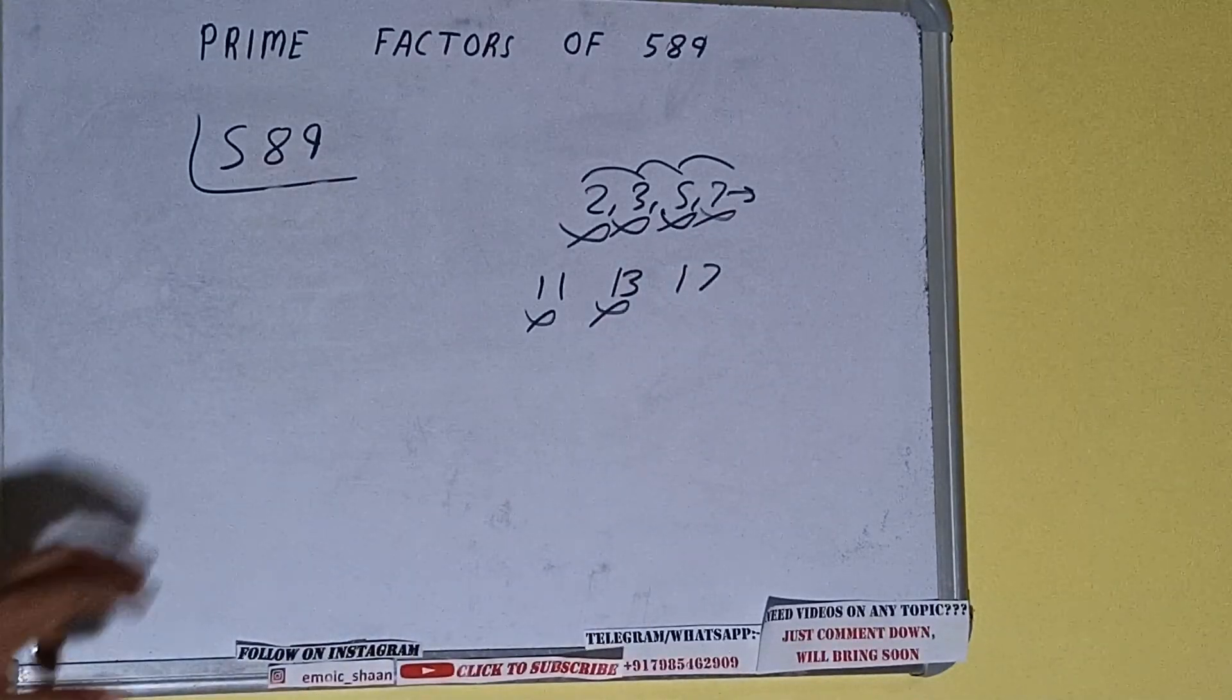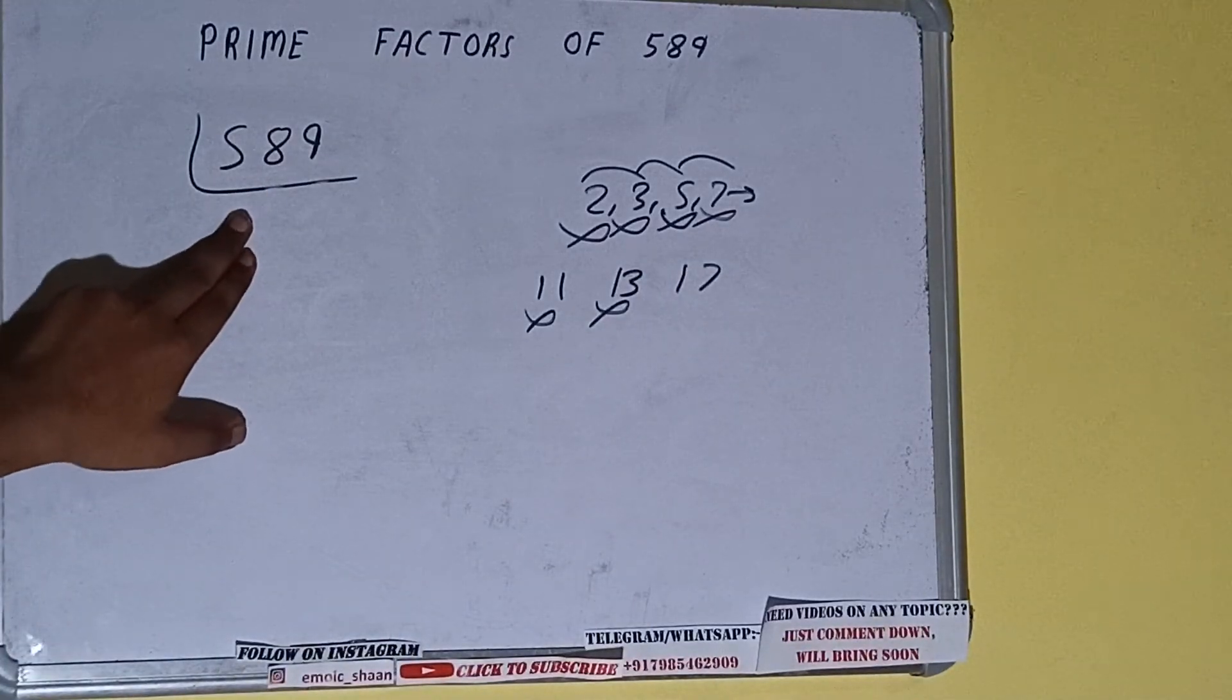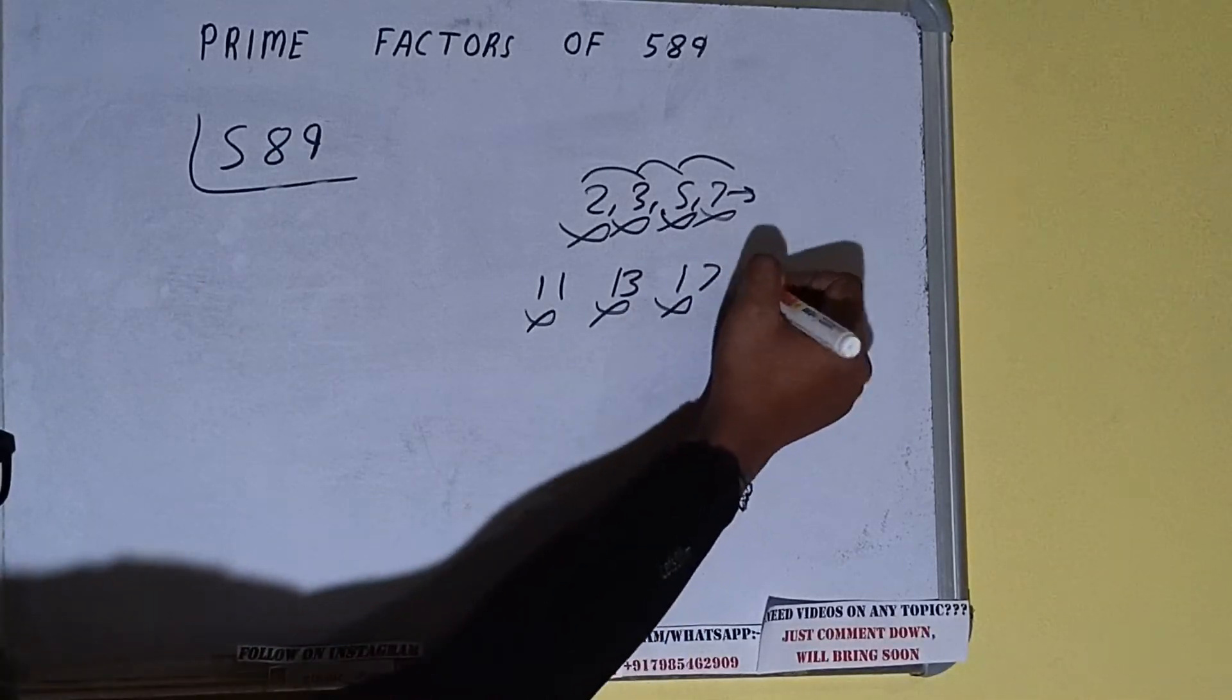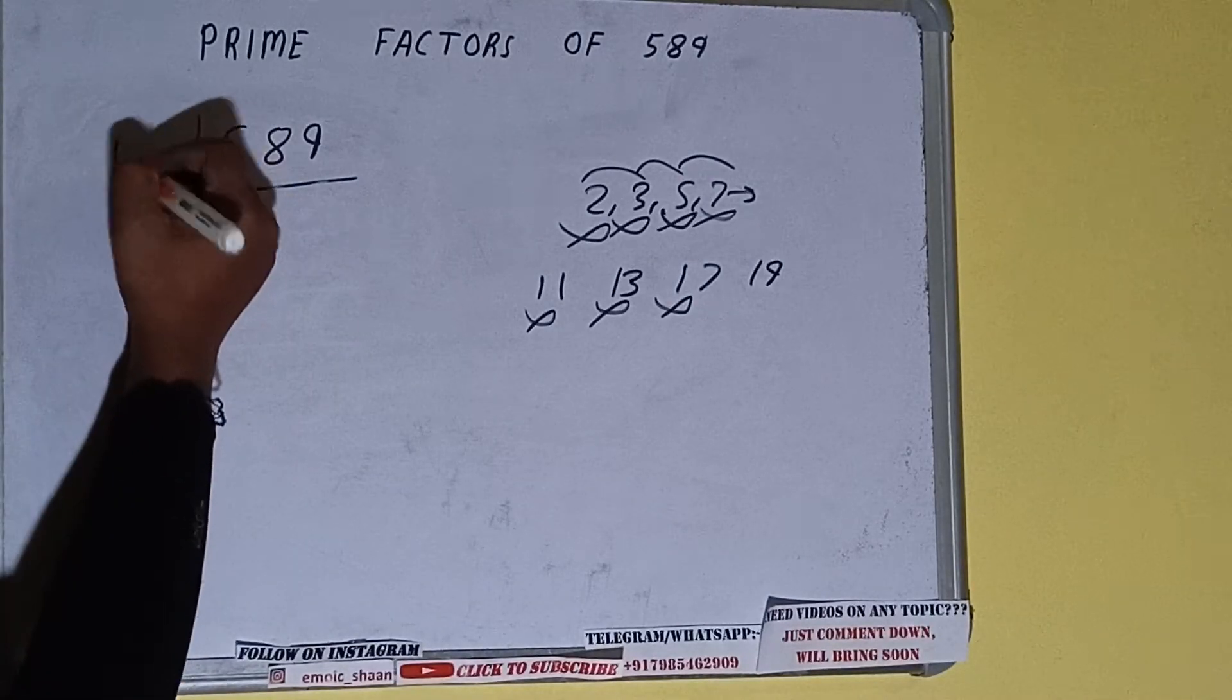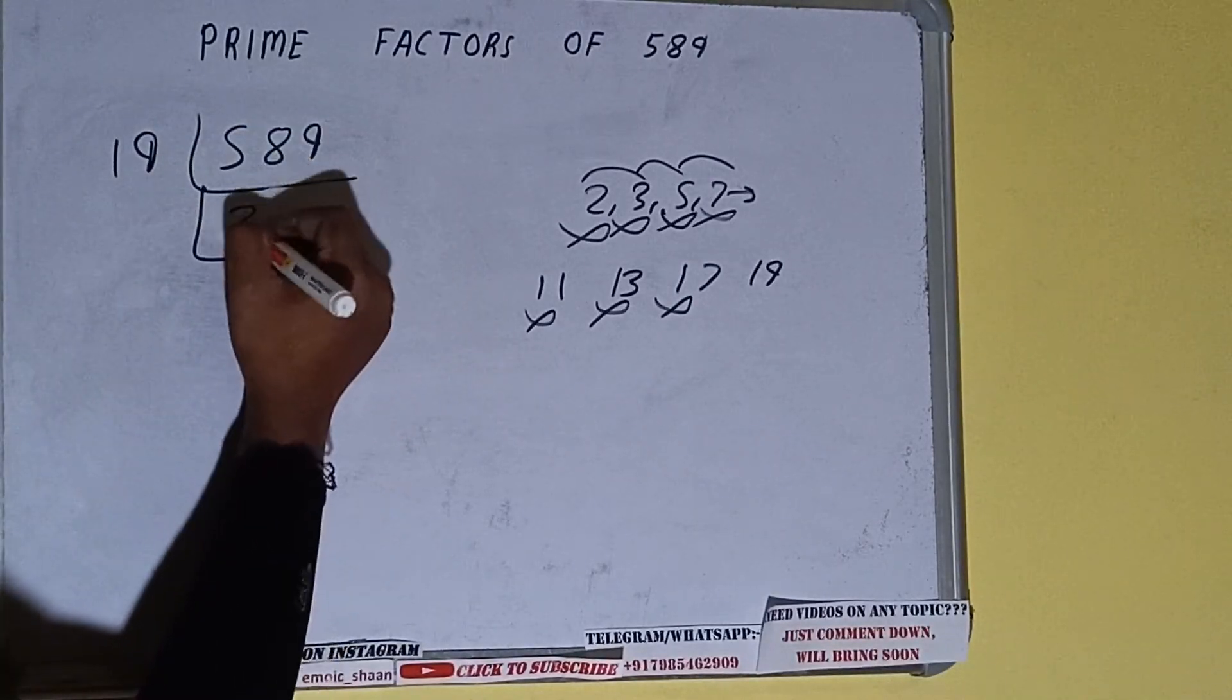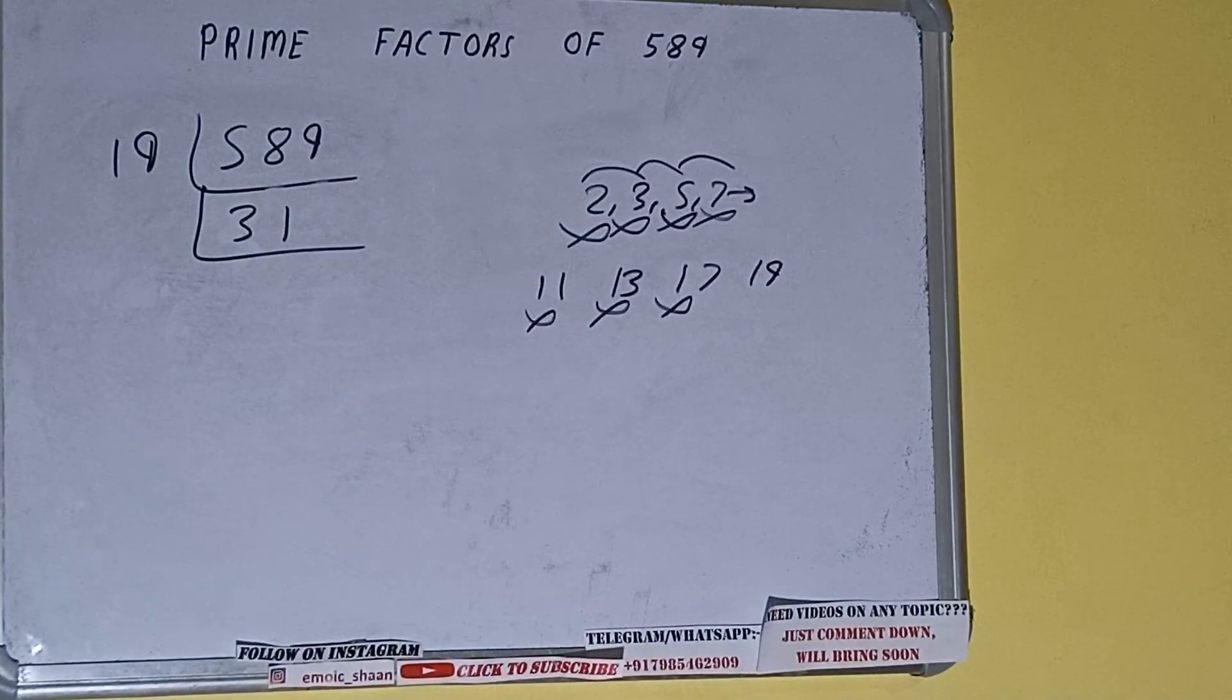Let's check with 17. 17 threes are 51, 7 9. With 17 also not divisible. So divided by 19, 3s are 57, 1 9.